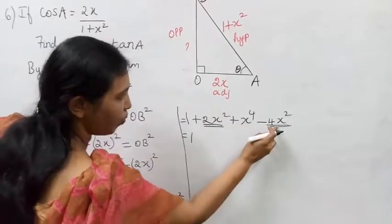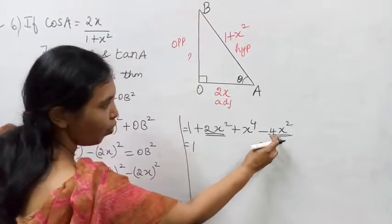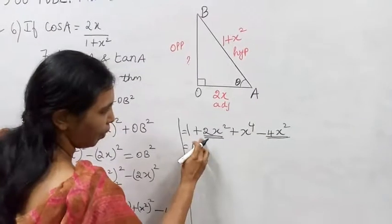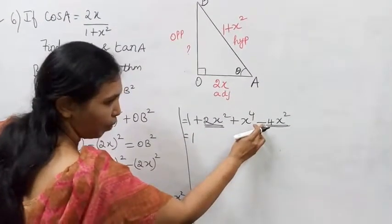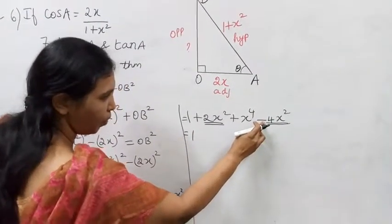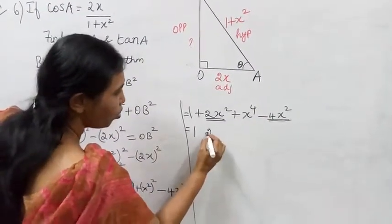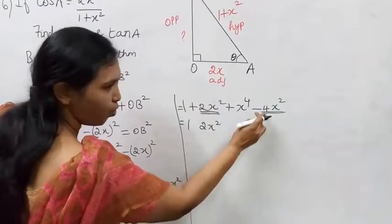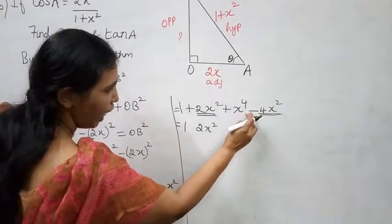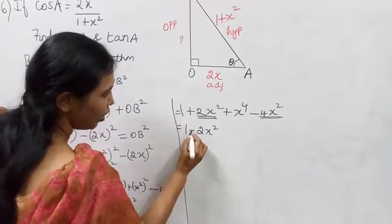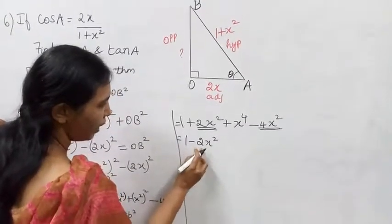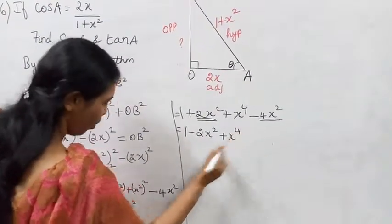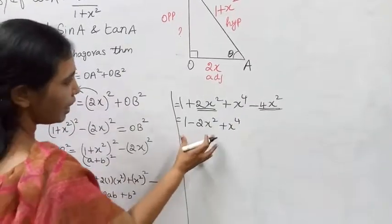Combining terms: 1 plus 2x squared minus 4x squared plus x to the power 4, which simplifies to 1 minus 2x squared plus x to the power 4.